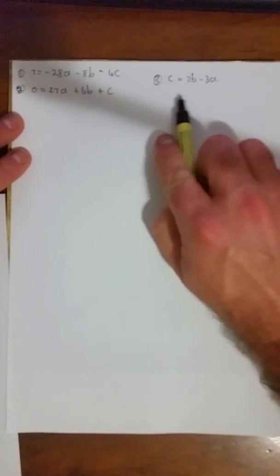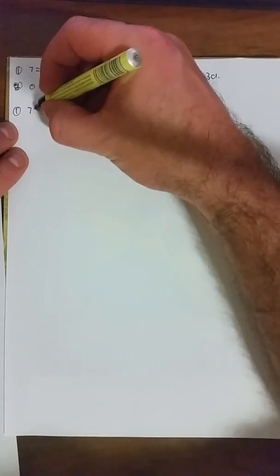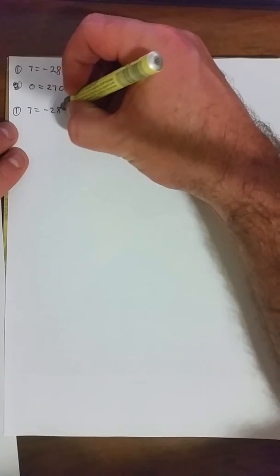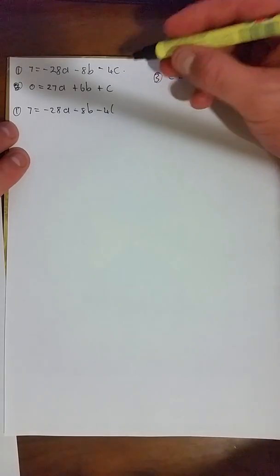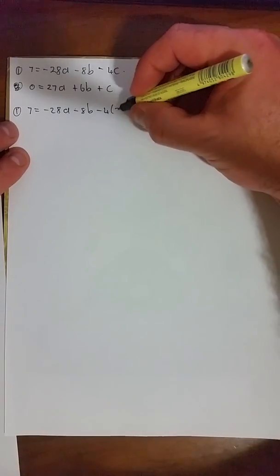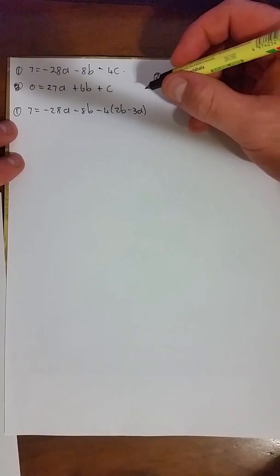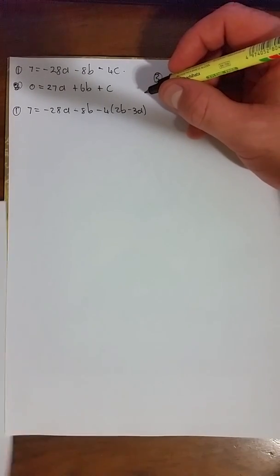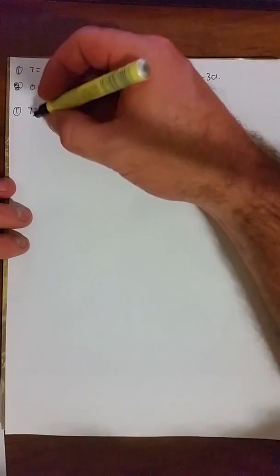So we're going to substitute this c expression into both of these equations. For the first equation, we get 7 = -28a - 8b - 4. And now, instead of c, we have 2b - 3a. We multiply that out and simplify it a little bit, which gives us the following.